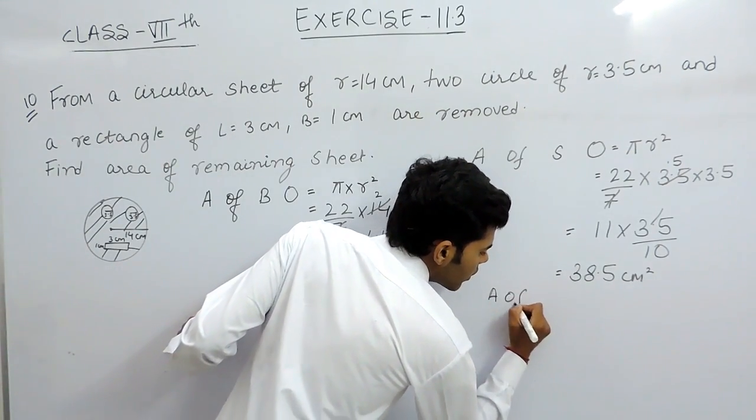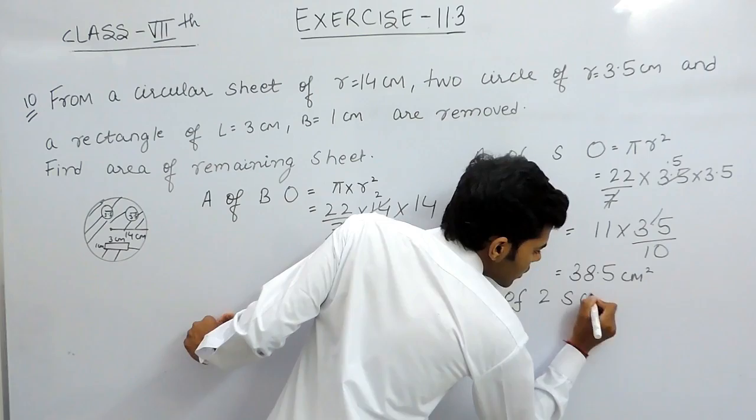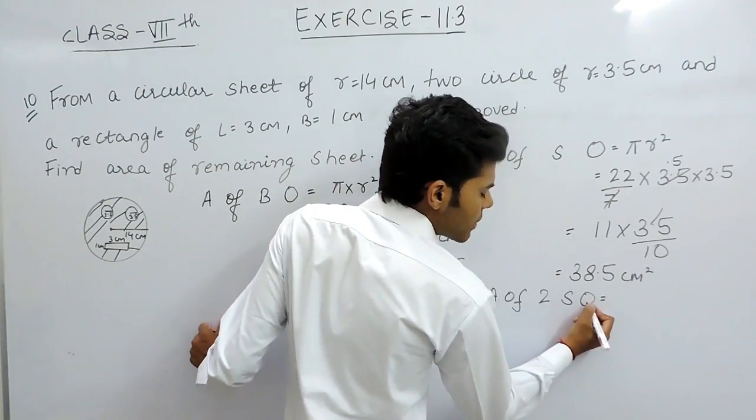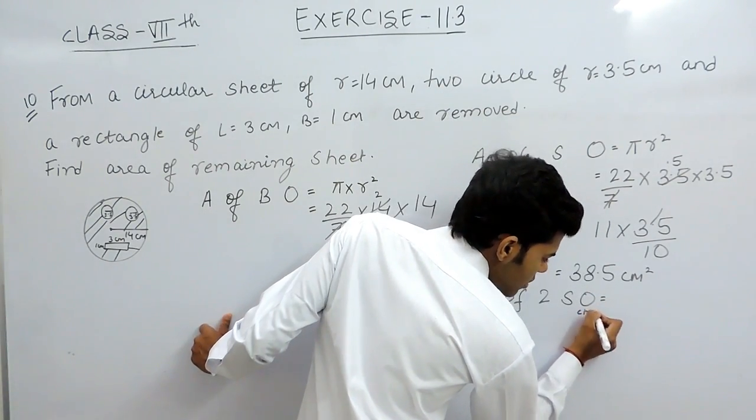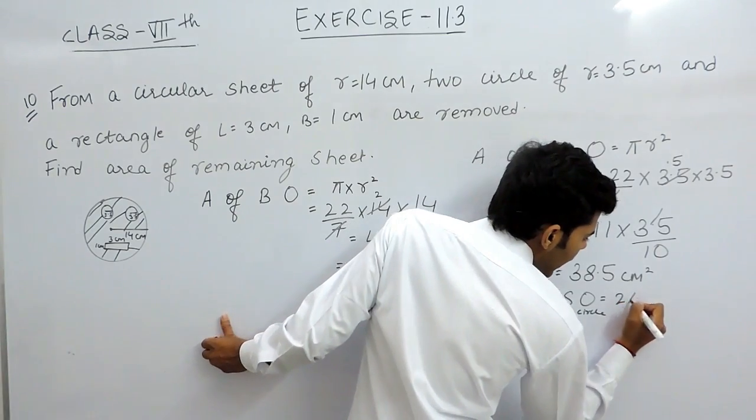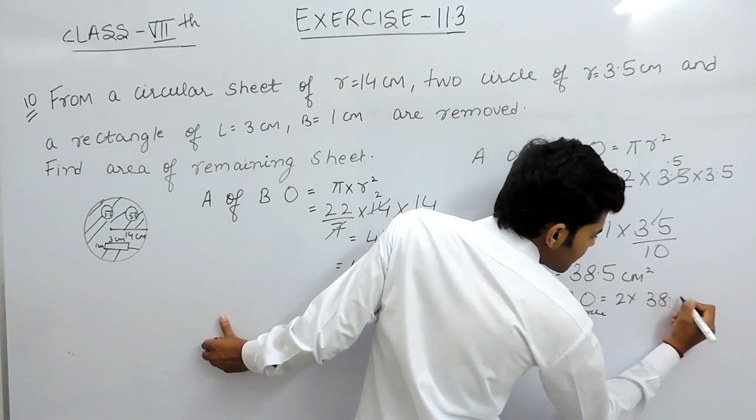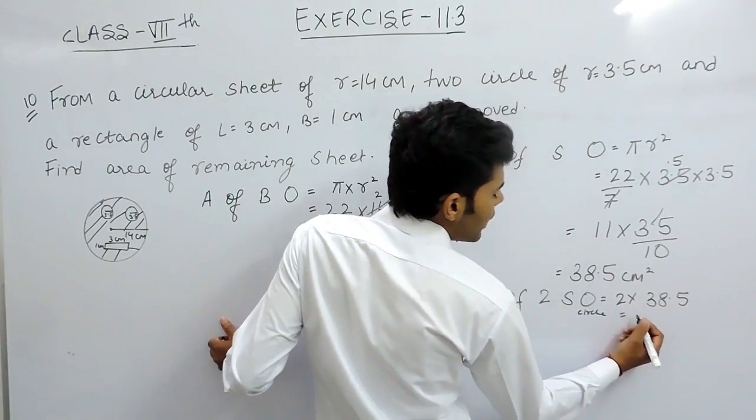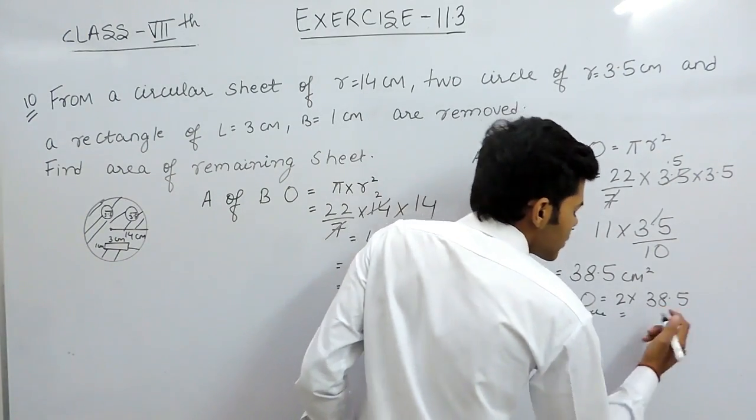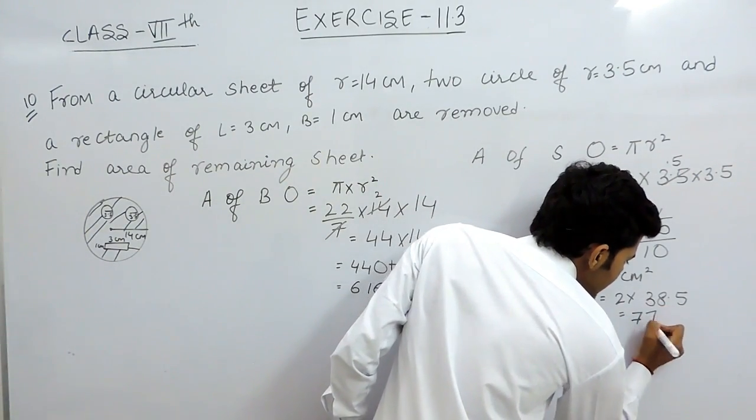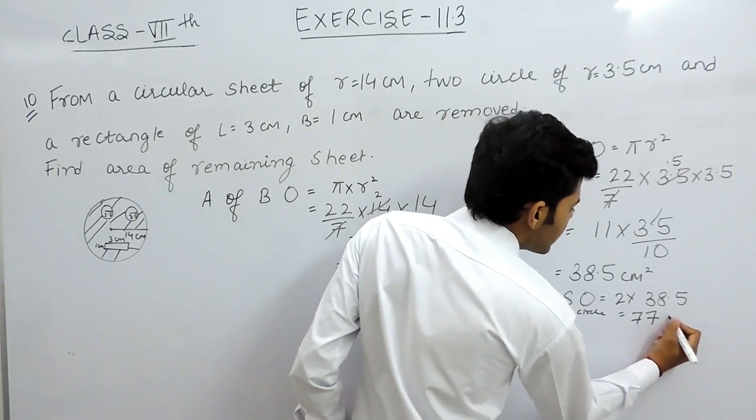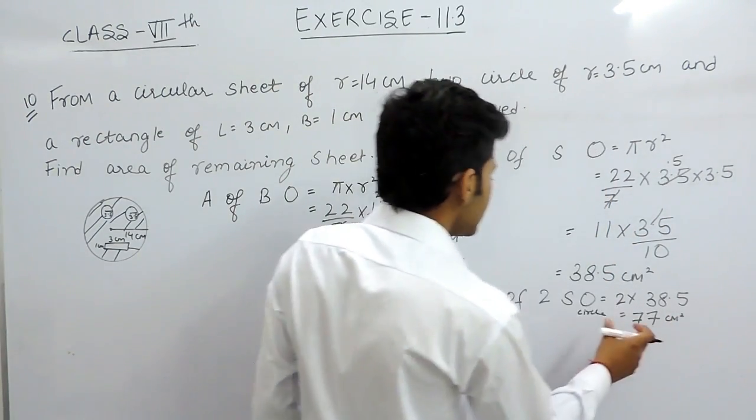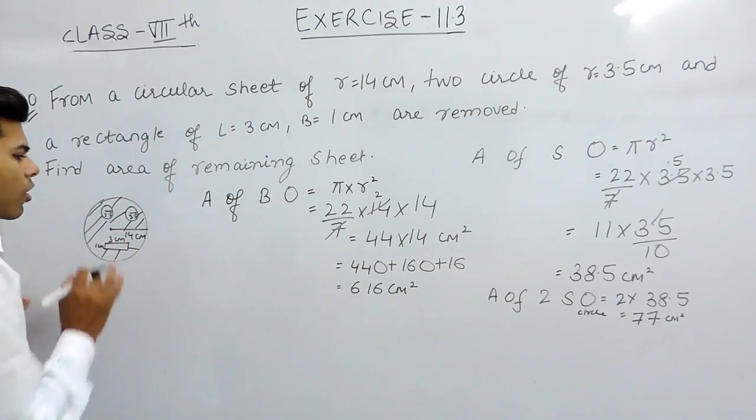Area of two smaller circles will be 2 multiplied with 38.5, that will be equal to 77 cm². This is the area of these two smaller circles.